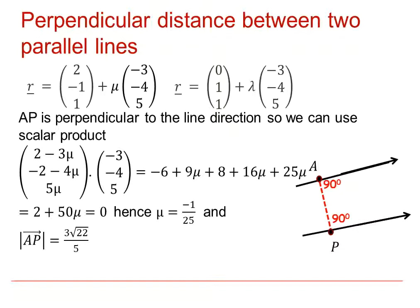In this question, mu equals minus 1 over 25. Having found mu, we can find the displacement vector from A to P.